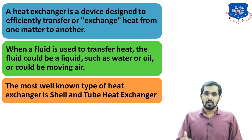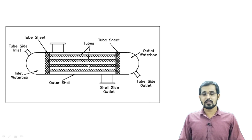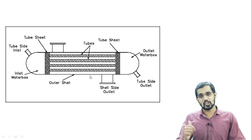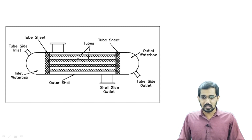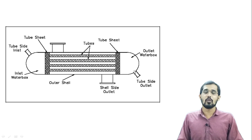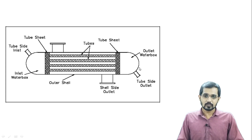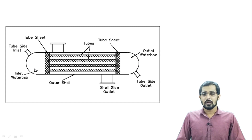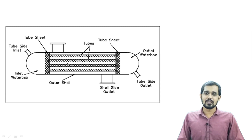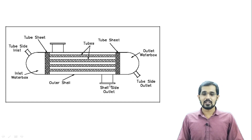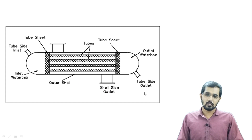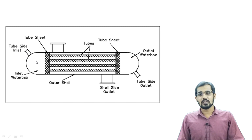The most well-known is the shell and tube heat exchanger. You can see this figure — it shows tubes separated by tie rods, and tube sheets. Cold fluid passes through the tubes and hot fluid passes from the shell side. You can see the front head and the rear head. The tube bundles are supported by baffles, which also increase the turbulence of the system. There is the outer shell, shell side outlet, shell side support, tube side outlet, and tube side inlet.